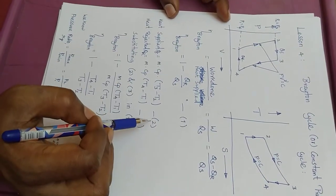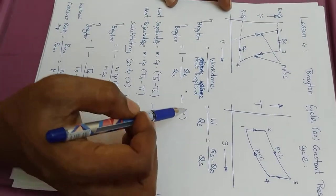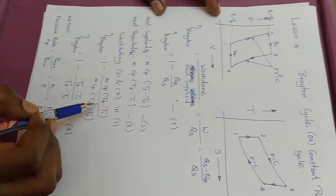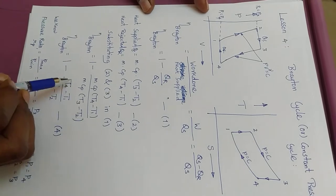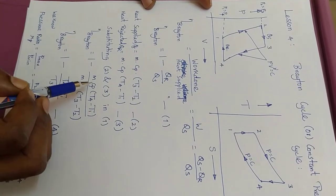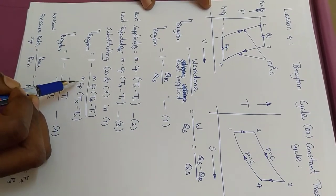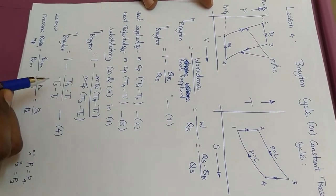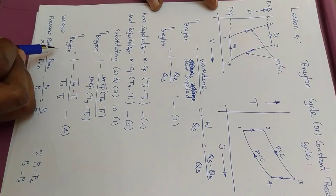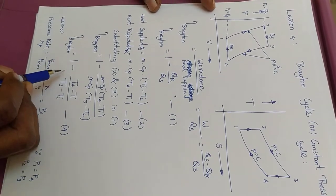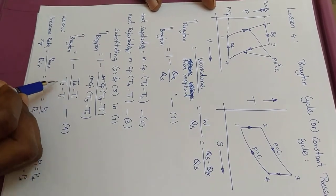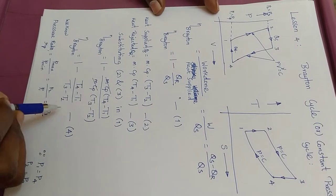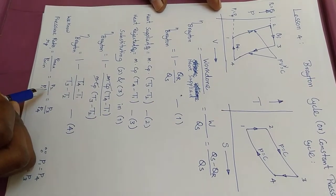Now let us substitute equations 2 and 3 into equation 1. We get 1 minus [m·Cp·(T4 minus T1)] divided by [m·Cp·(T3 minus T2)]. In both numerator and denominator, m·Cp is constant and gets cancelled. So finally we get the efficiency of Brayton cycle is equal to 1 minus (T4 minus T1) by (T3 minus T2).